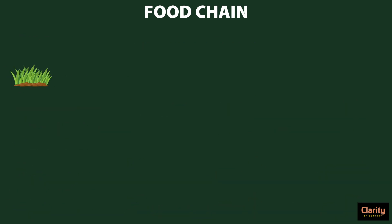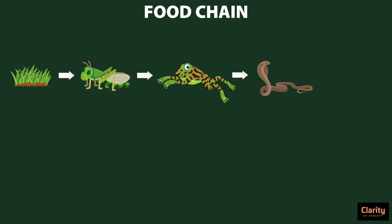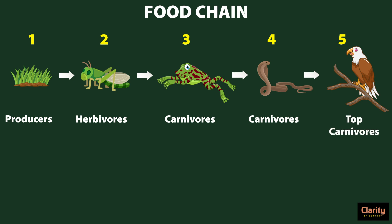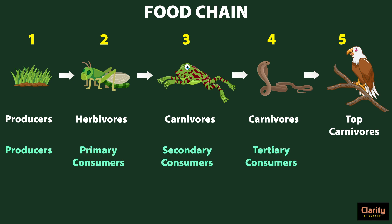Let us consider an example of a food chain. Grasses are eaten by grasshoppers; grasshoppers are eaten by frogs; frogs are eaten by snakes; and snakes are in turn eaten by eagles. Grasses are trophic level 1, grasshoppers are trophic level 2, frogs are level 3, snakes are level 4 and eagles are level 5. Grasses are producers; grasshoppers who eat them are called herbivores. Herbivores are eaten by carnivores and carnivores are eaten by top carnivores. Another way of referring to them is producers, primary consumer, secondary consumer, tertiary consumer and quaternary consumer.